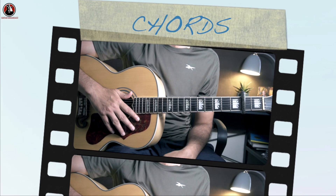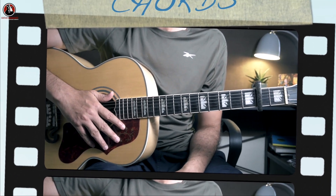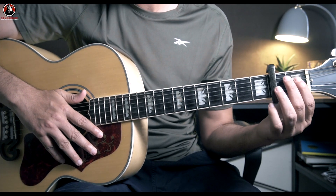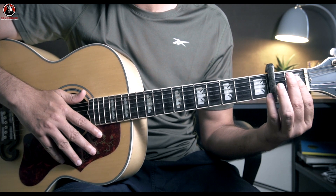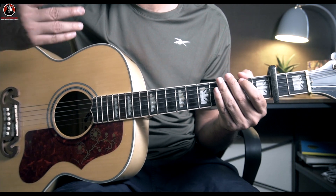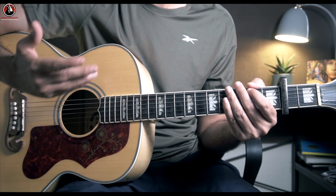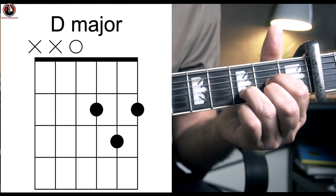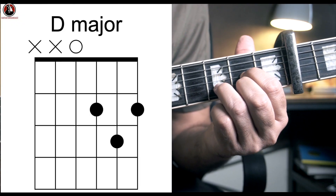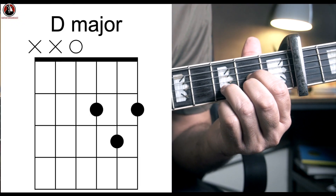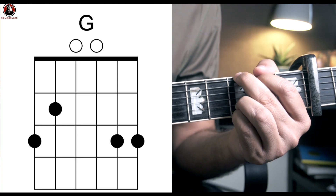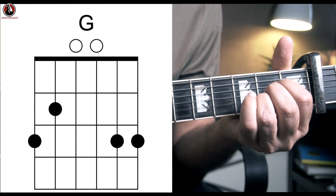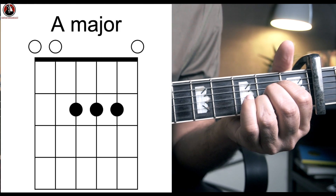The song has two parts: the verse and the chorus. To play the song you need a capo on your second fret, which gives you slightly beginner-friendly chords. The chords of the song are simple: D major, with the capo on the second fret, then your simple G major, and then A major.